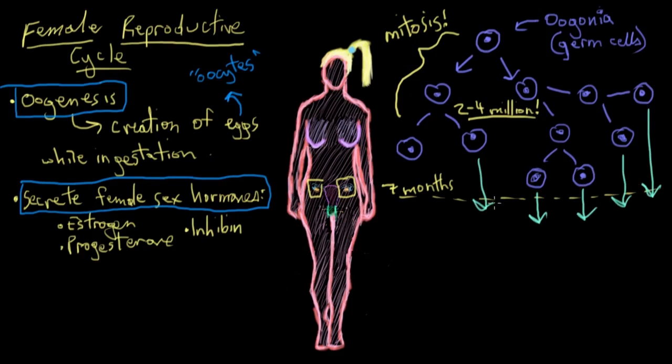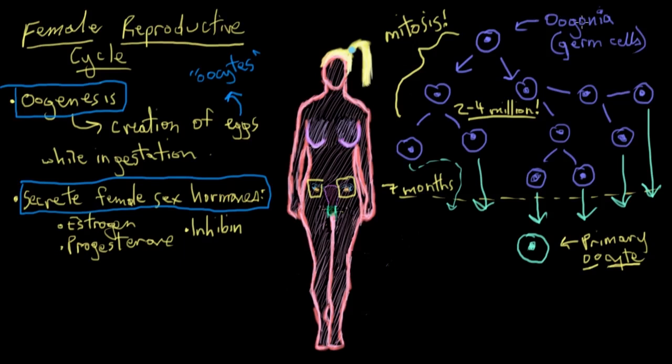That turns out to be about one to two million per ovary. While she's still in fetal development, all of these oogonia develop into the next stage, which is a primary oocyte. The 'oo' refers to egg, and 'cyte' (C-Y-T-E) refers to cell — so this just means egg cell. On a chromosomal level, these oogonia are 2N, meaning they have two copies of each chromosome, and the primary oocytes are also 2N.